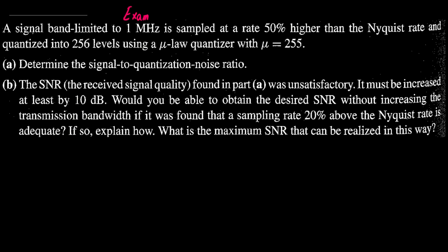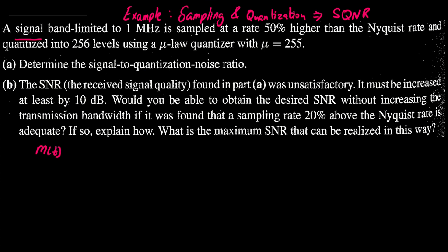In this example we are going to look into sampling and quantization, and for the latter we would also look into the signal to quantization noise ratio. So let us first start with a signal m. This signal is band-limited to one megahertz — that is, we have a baseband signal Fb and its bandwidth is one megahertz.